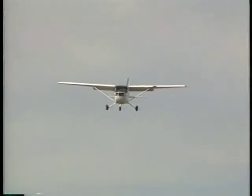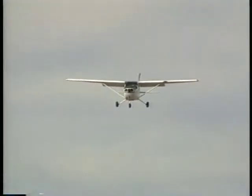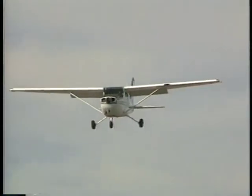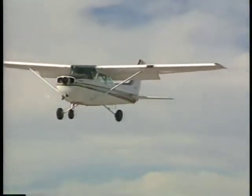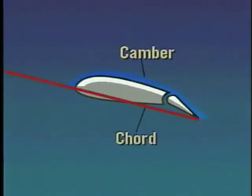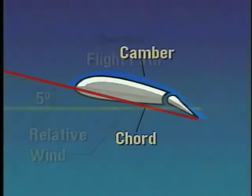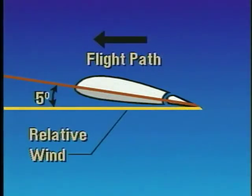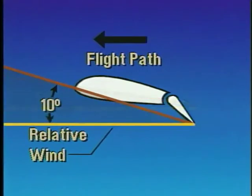Another way of controlling lift is by changing the configuration of the wing. Lowering the flaps can increase the lifting efficiency of the wing and decrease the airspeed at which the airplane stalls. As flaps extend, they change both the camber and the chord line of the wing in the area of the flaps. This not only produces lower pressure above the wing due to the change of camber, but it also changes the wing's angle of attack. Suppose that with the flaps up, the angle of attack is five degrees. By lowering the flaps, which changes the chord line, the angle of attack increases to ten degrees. This higher angle of attack provides more lift and more drag.